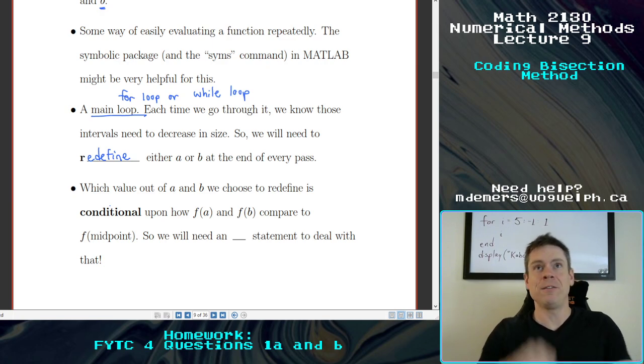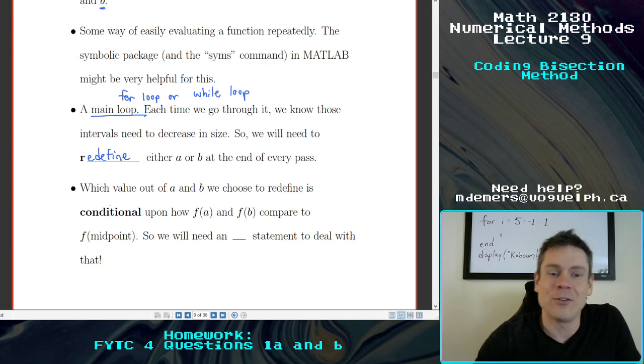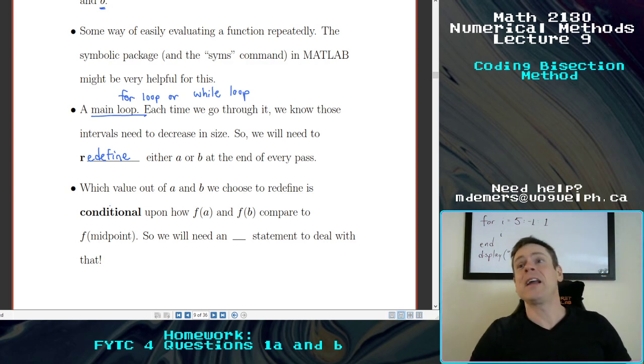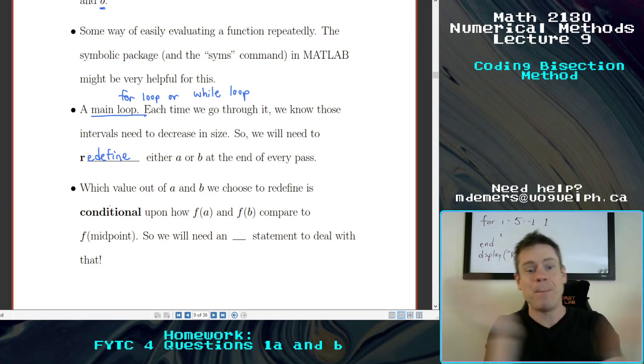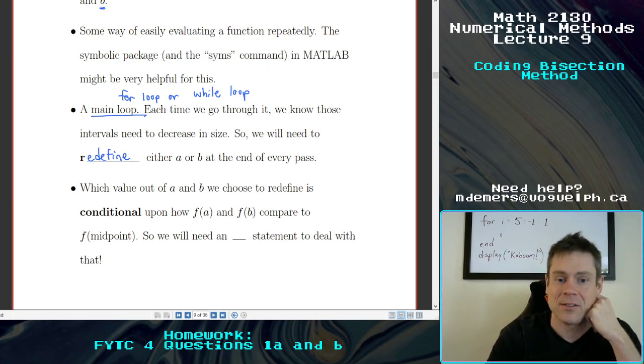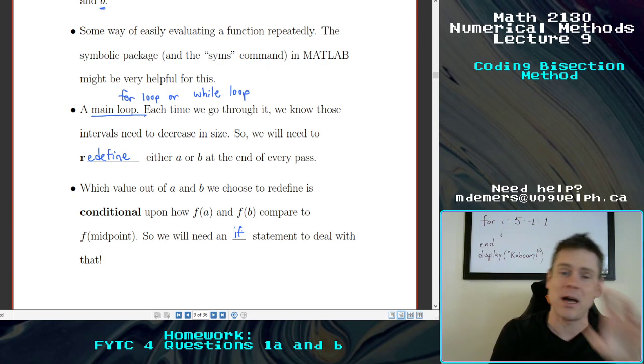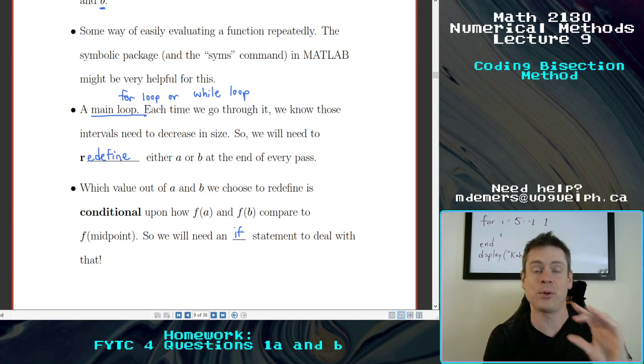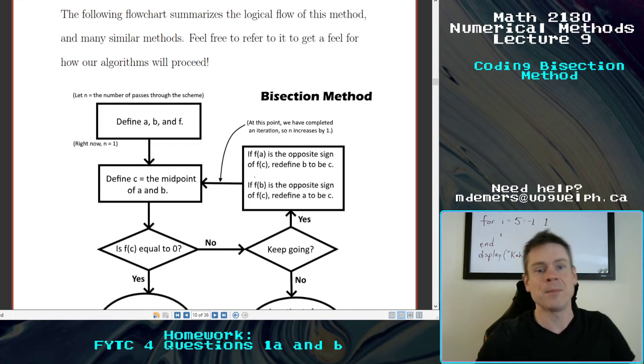Basically, whether the function evaluated at the midpoint is the same sign as or the opposite sign as. And that sounds a whole lot like a conditional. That sounds a whole lot like a conditional because it depends on, right, how F of A and how the F of B compare to F at that midpoint. So we need some sort of an if statement to deal with that. Okay, that is actually a little bit creative. And I'm going to show you exactly what I use in my code to make things pretty efficient. But let's go through a bit of a flow chart to kind of summarize how this works. So this is going to put out all of the different steps.